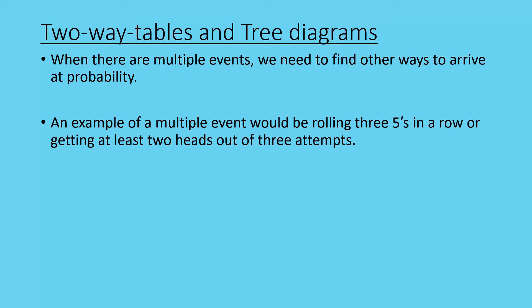An example of a multiple event would be rolling three fives in a row, or getting at least two heads out of three attempts. The examples we're going to look at are as simple as possible. First, we'll look at two-way tables, which are used when there are only two events.